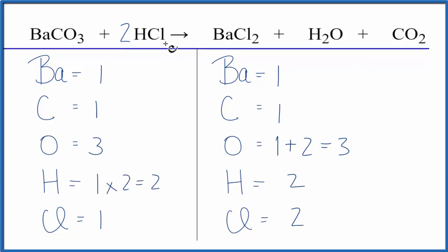The hydrogens are balanced. Chlorines, one times two. That gives us two chlorines. And we're done. This equation is balanced.